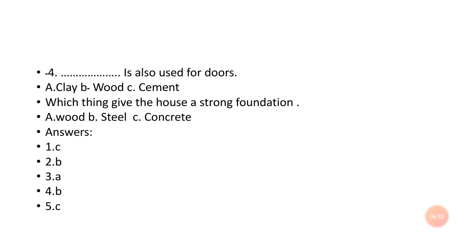Number five: which thing gives the house a strong foundation — option B: wood; option C: concrete. Concrete is a mixture of small stones, cement, and sand, which gives a strong foundation to our houses. So the answers are: number one — C, number two — B, number three — A, number four — B, number five — C.